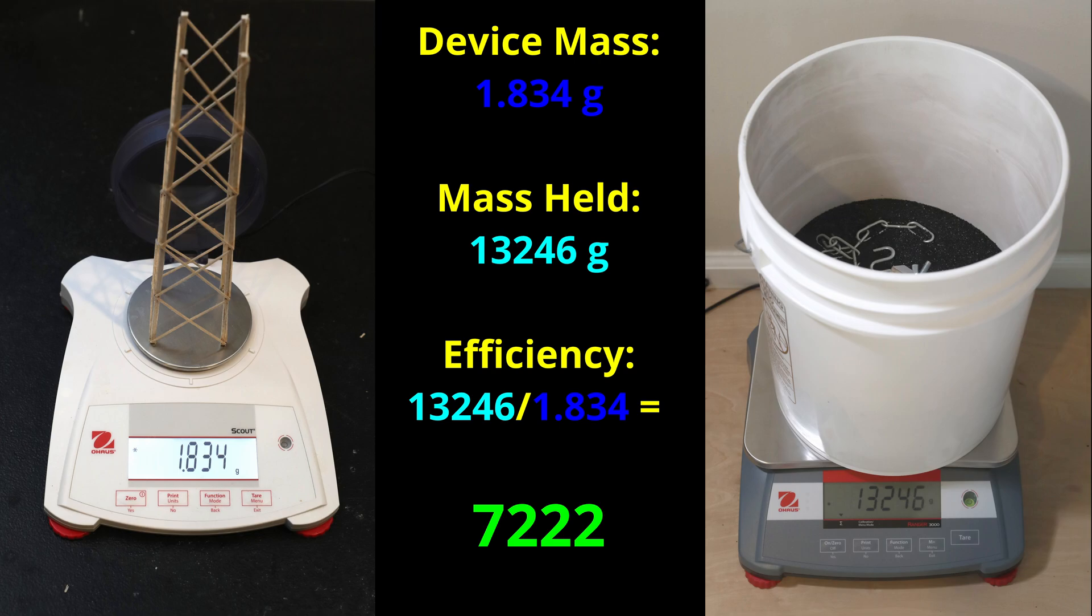...we are trying to build a device where the maximum load it holds divided by its mass is the highest. For example, here is a tower column that weighs 1.834 grams, and when it broke during testing, the bucket with sand, loading block, and chain weighed 13,246 grams. That would mean its efficiency is just over 7,222. This is a very important concept to understand and is the basis for scoring in this event every year.